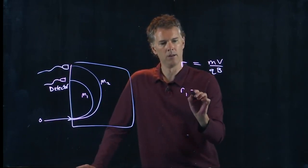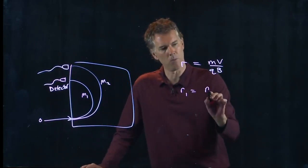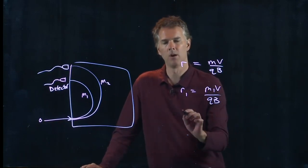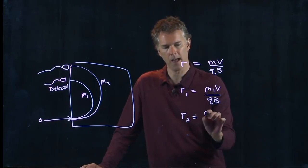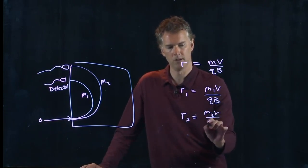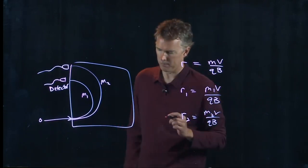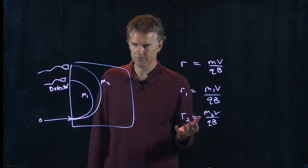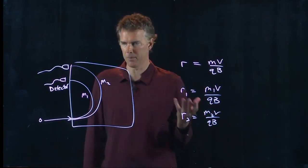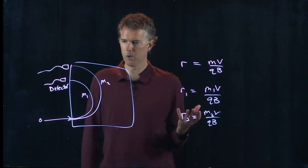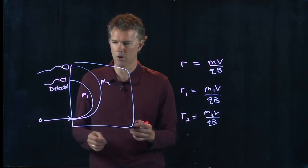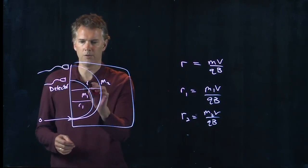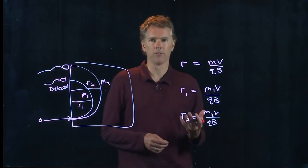Now if this is m1 and this is m2 then we can calculate exactly what those positions of the detectors need to be. R1 is going to be m1 times v divided by q times b. R2 is m2 times v divided by q times b. And let's take some real numbers from the mass spec here and let's see what these differences are.